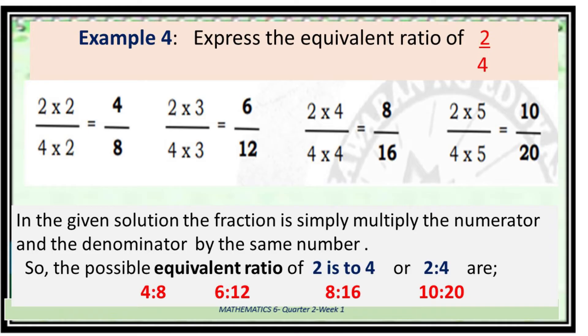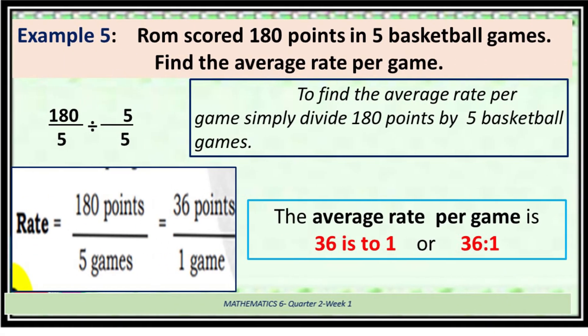Another example. Wong scored 180 points in 5 basketball games. Find the average rate per game. To find the average rate per game, simply divide 180 points by 5 basketball games. So 180 divided by 5 equals 36 points. Therefore, the average rate per game is 36 is to 1.